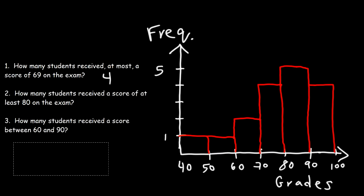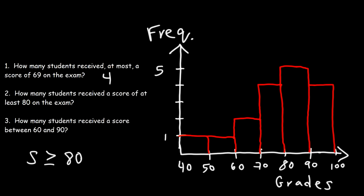Number two: how many students received a score of at least 80 on the exam? 'At least 80' means 80 is the minimum, so S ≥ 80. Between 80 and 89 there were 5 students, and between 90 and 100 there were 4 students. So 5 + 4 = 9 students received a score of at least 80.